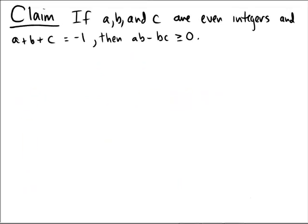Let's try to convince somebody of the following claim: that if a, b, and c are even integers and a plus b plus c is equal to negative one, then ab minus bc is bigger than or equal to zero.